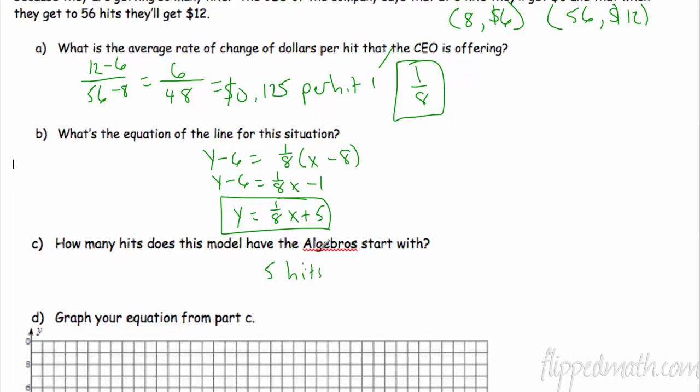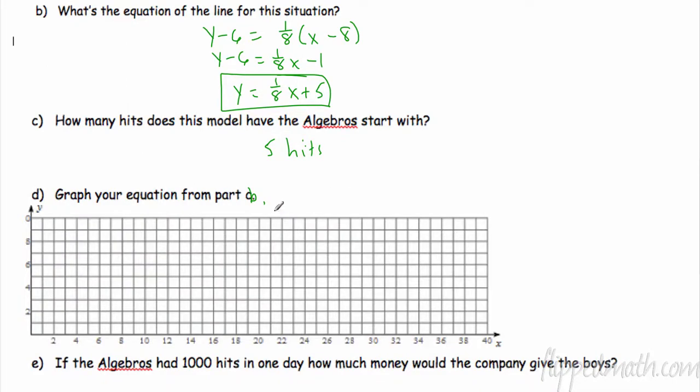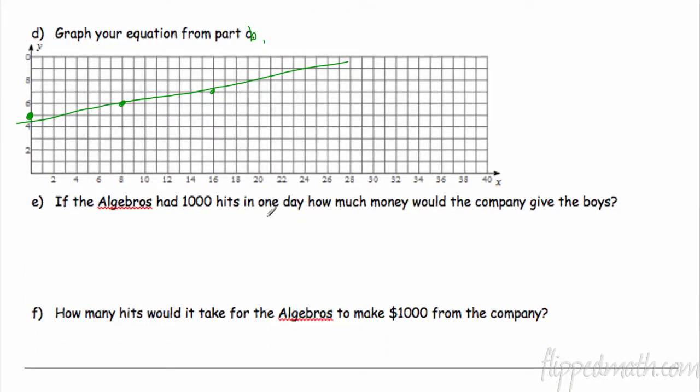Okay, and this of course is from part b. So graph our equation from part b plus 5. Start here, up 1 over 8, up 1 over 8, up 1 over 8.